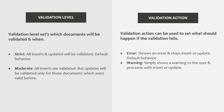Validation level sets which documents will be validated and when. There can be two values for validation level: strict and moderate. When we set the validation level to strict, all inserts and updates will be validated. Every time you insert or update a document in a collection, MongoDB will perform schema validation on the data, and only if the data is valid will it be inserted or updated. This is the default behavior.